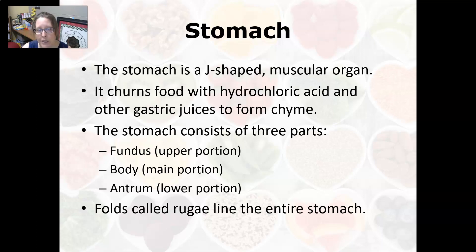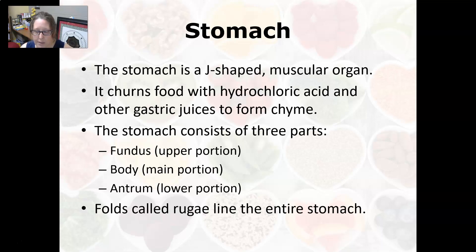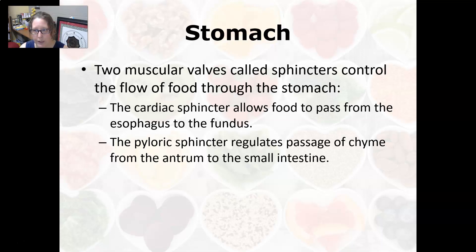The stomach is a J-shaped muscular organ that churns food with hydrochloric acid and other gastric juices to form chyme. The stomach consists of three parts: the fundus, which is the upper portion; the body, which is the main portion; and the antrum, which is the lower portion connecting to the pyloric canal and small intestine. Folds called rugae line the entire stomach, allowing it to be distendable. Two sphincters control food flow: the cardiac sphincter allows food in from the esophagus, and the pyloric sphincter regulates chyme passing into the small intestine.